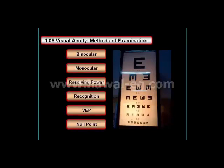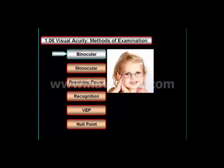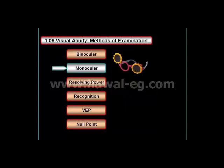Methods of examination of visual acuity are numerous: binocular visual acuity testing, monocular, the use of resolving power or recognition, visual evoked potential, and visual acuity testing in nystagmus with null point. Visual acuity when tested with both eyes open produces the highest acuity. Monocular acuity may be equal to but is never better than binocular acuity, and monocular acuity is reduced in cases with latent nystagmus.